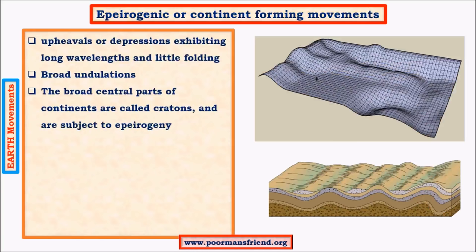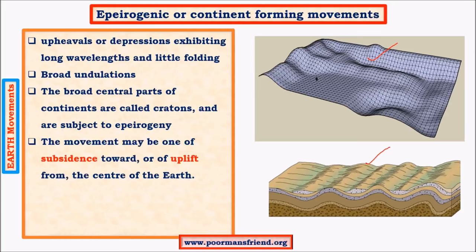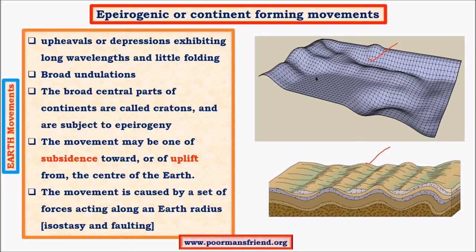Epirogenic or continent-forming movements are broad undulations occurring over large distances, shaping the continents. There are two important movements: uplift and subsidence, depending on whether the movement is away from or towards the earth's center. Upliftment is away from the center whereas subsidence is towards the center. These are called radial forces because they act along the earth's radius, driven by processes like isostasy and faulting.